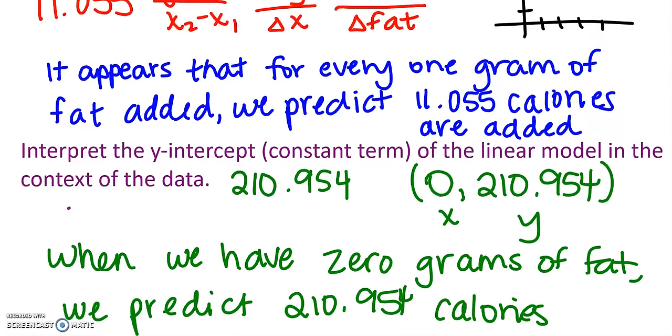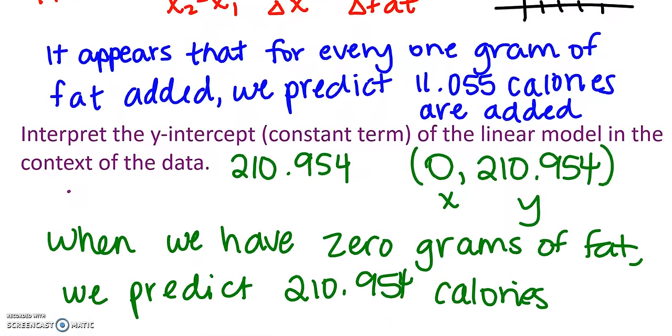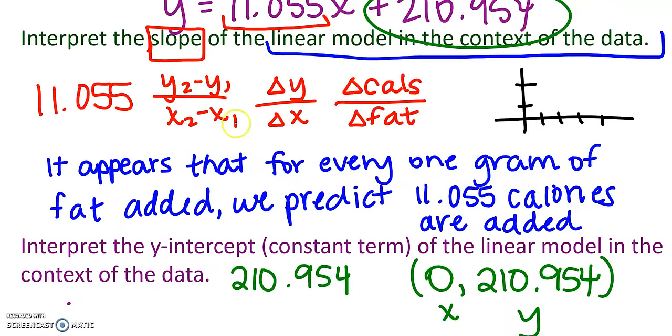These two questions, by the way, are going to be asked of you a lot when we're talking about scatter plots. So I would continue to break down the question in the way that I did. Think about the change in y, change in x, and what units you're using. All right, so for every one gram of fat, we increased by 11 calories. Okay, think about where those things fall as far as variables go.